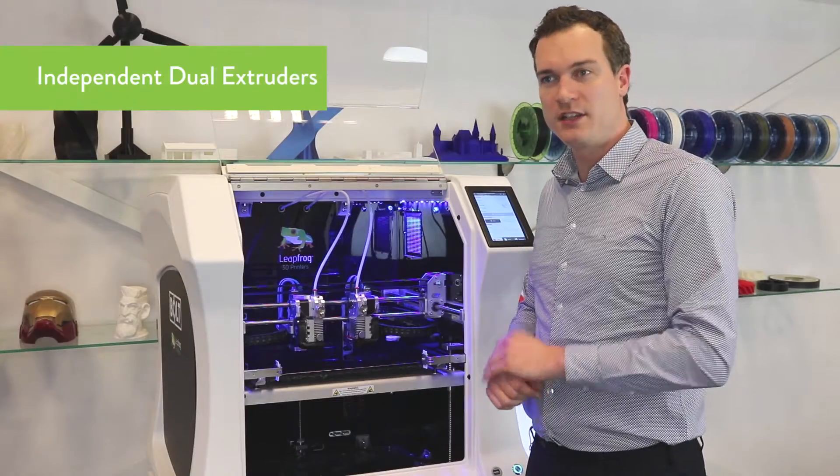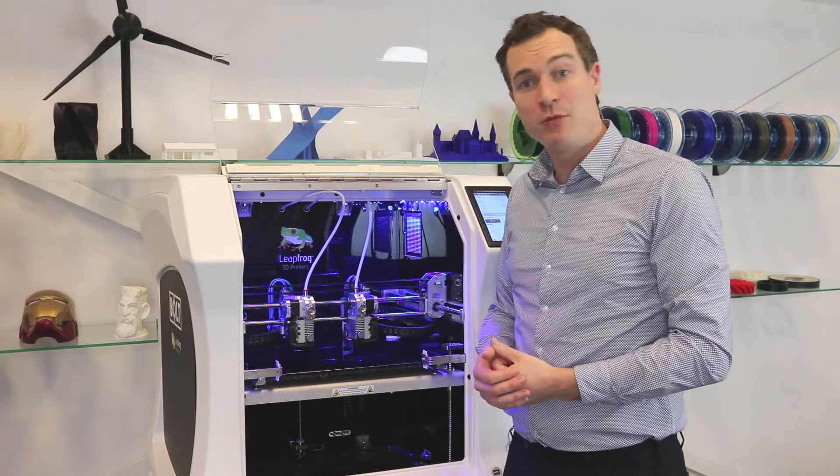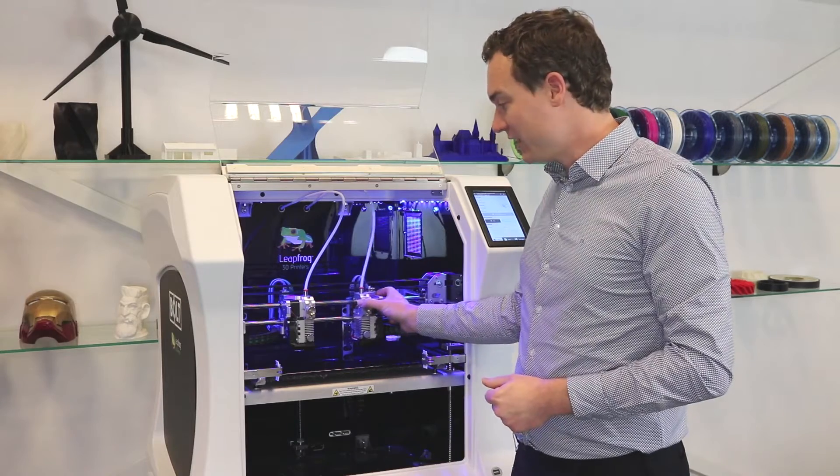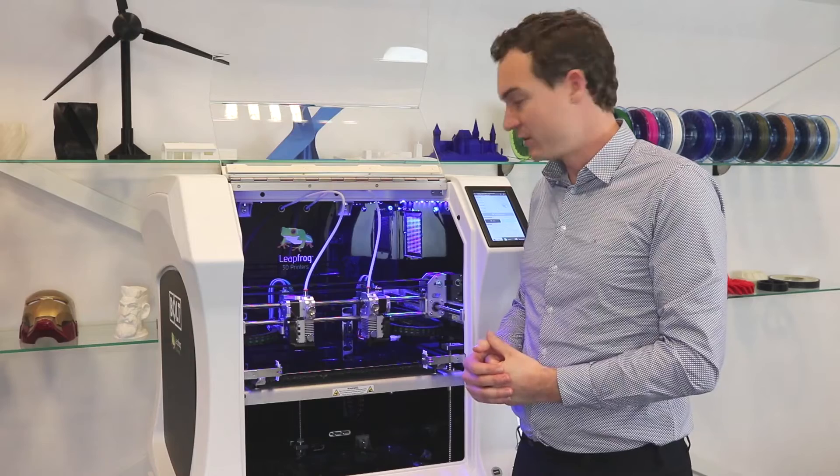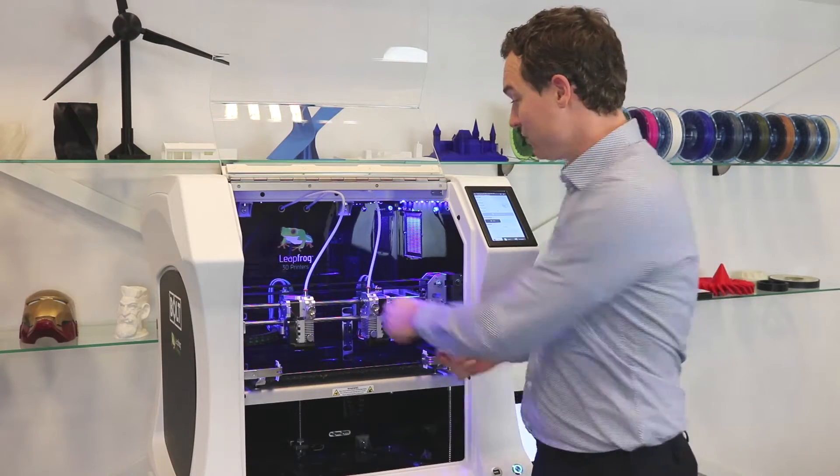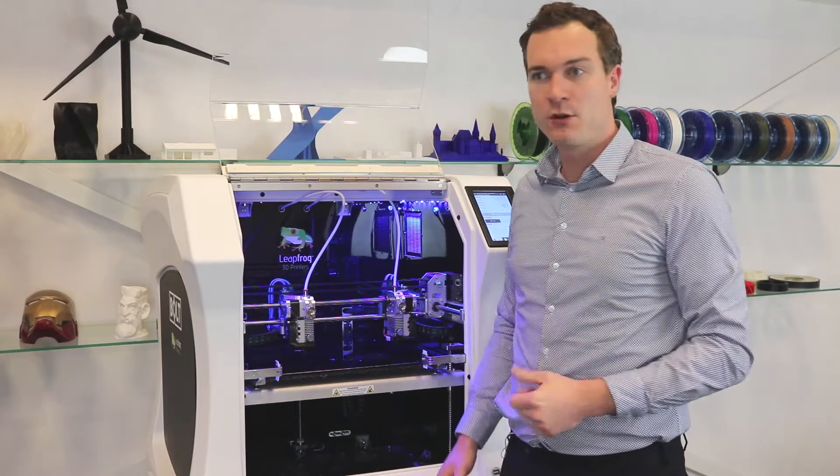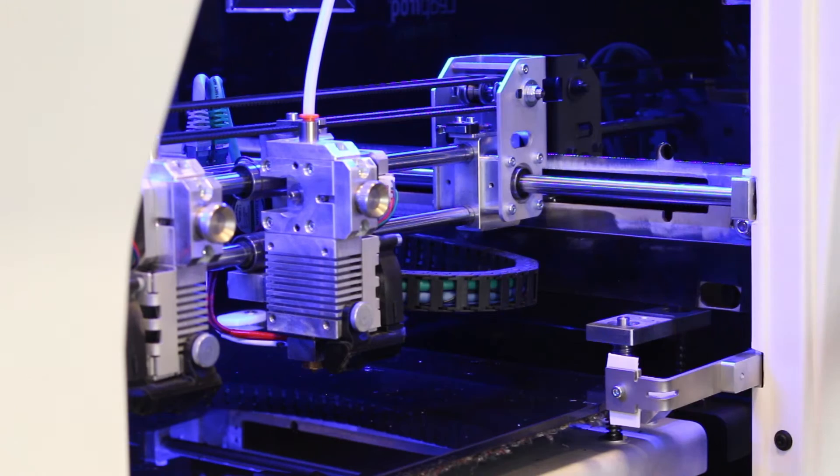One of the key distinguishing features of the Bolt are its dual-independent extruders. By being able to move separately, this technology allows you to make the best multicolor and multi-material prints. For instance, take dual-color prints. With conventional dual-extrusion printing, oozing is an issue when the inactive head leaks filament on the workpiece. Not with the Bolt.